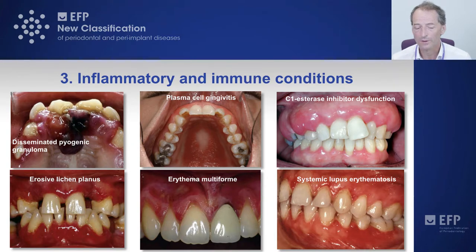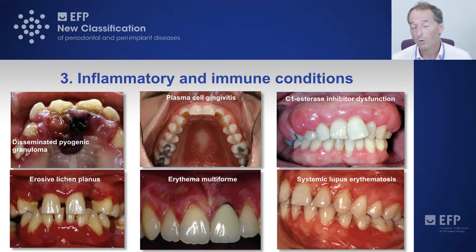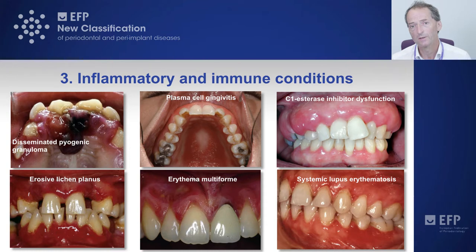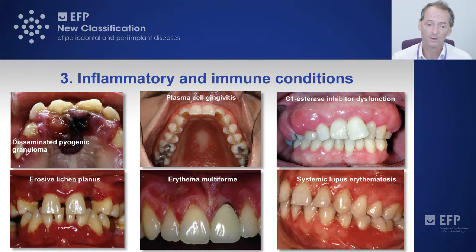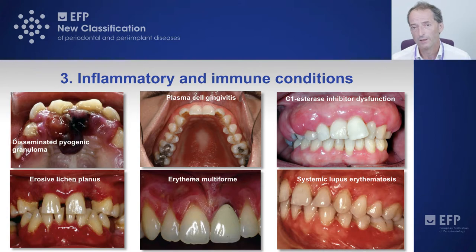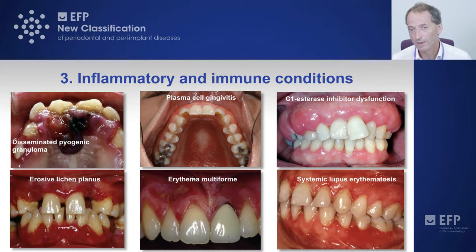Erythema multiforme is a sterile condition — a type of hypersensitivity reaction either to residual particles of the herpes virus or possibly to drugs. Patients may start a drug and develop this allergic reaction, giving rise to both oral and genital ulceration, so history is important in making the diagnosis. Finally, on the bottom right, we have systemic lupus erythematosus, or SLE, also presenting as desquamative gingivitis. The clinical description of desquamative gingivitis requires further investigation to determine the true underlying pathology.